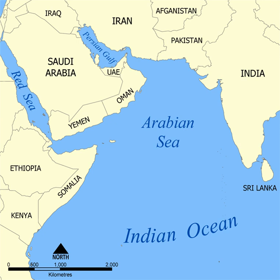This is a list of seas, large divisions of the World Ocean, including areas of water variously — gulfs, bights, bays, and straits.